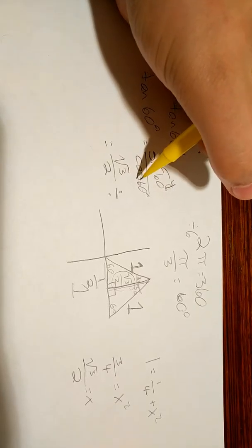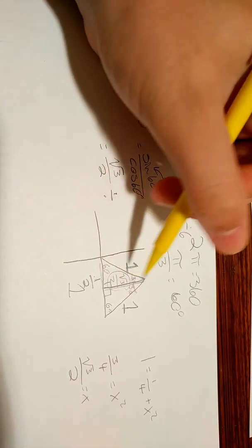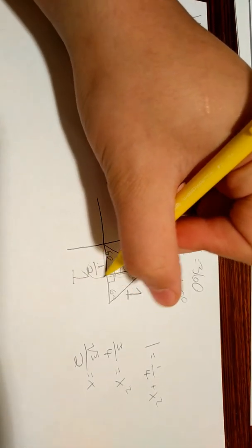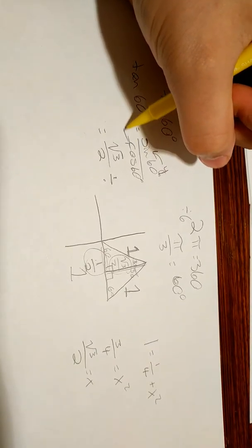Divided by, and the cosine of 60, which is 1 half, because cosine is the x.